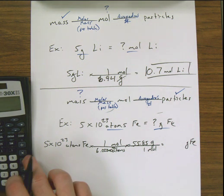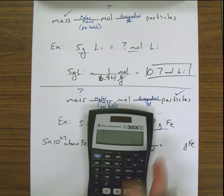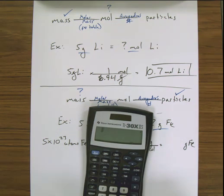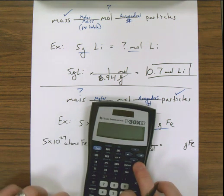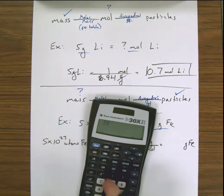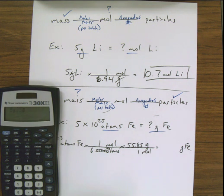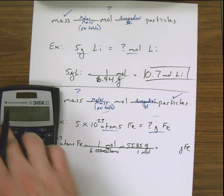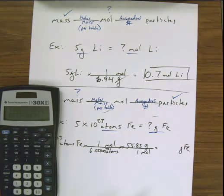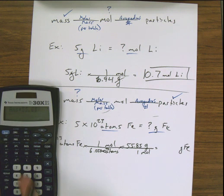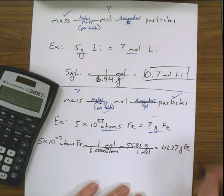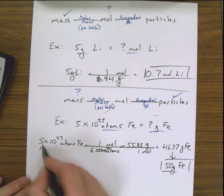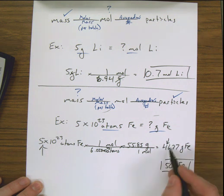When typing this into the calculator, make sure you're hitting the E button and not the caret button. So it's 5E23 divided by 6.022E23, then multiplied by 55.85, and I end up with 46.37. Rounding to one significant figure — because my starting information had only one sig fig — the 6 bumps it up and I have 50 grams of iron.